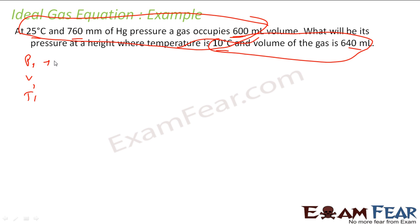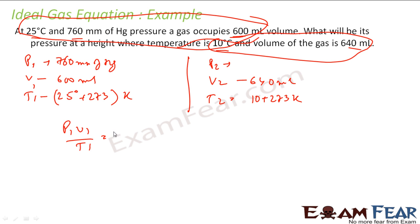So let us assume condition 1 has P1, V1 and T1. What is the pressure at condition 1? 760 mm Hg. What is the temperature? 25 degree Celsius. But we know it has to be in Kelvin. So we will add 273. This becomes Kelvin. Let us talk about condition 2. Pressure 2 is what? We have to find. Volume 2 is what? 640 ml. Temperature 2 is what? 10 degree Celsius. We convert this into Kelvin. So all this is matching. Milliliter, milliliter, Kelvin, Kelvin.